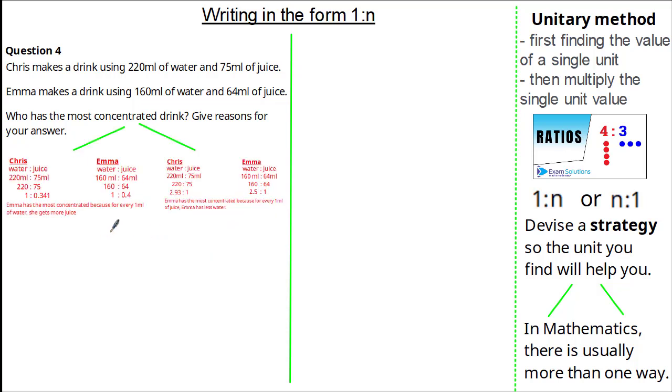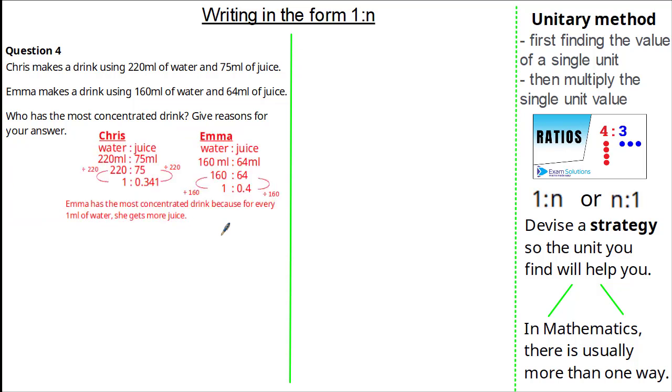So you can see, there are a couple of different ways to get the correct answer. As long as you have a clear strategy and understand the numbers, it's really your preference. For me, for this question, I prefer to find one part water to juice.